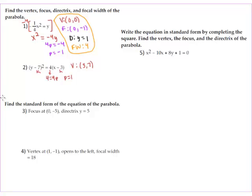Since we're in the right-hand column, our focus is at h plus p comma k, so three plus one is four comma seven. Our focus is at four comma seven. The directrix since we're in the right-hand column is x equals h minus p, so h is three minus p which is one — that gives x equals two. Our focal width is the absolute value of four p; four p is four, so our focal width is positive four.